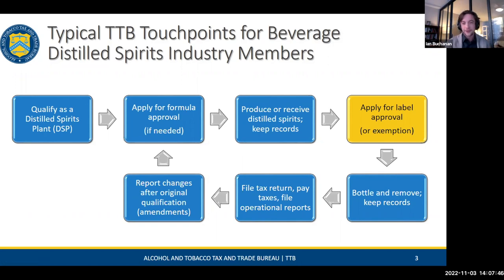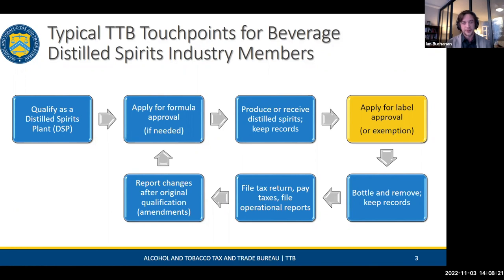When it comes to labeling, we're in the fourth part of the process. You've come from permitting to make sure your DSP is in order, then started production dealing with formulation if necessary, then produced or distilled your spirits. Before you bottle, you come to us to make sure your label is in order. Never bottle before this point — you can run into issues such as spelling errors or a missing government warning. Make sure you do not bottle until you get your label approved, then bottle, remove, file taxes, report changes as necessary.